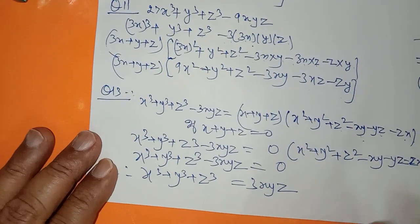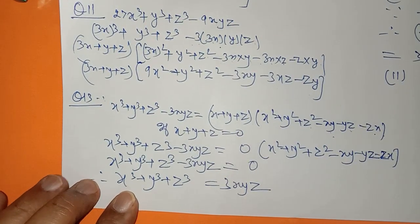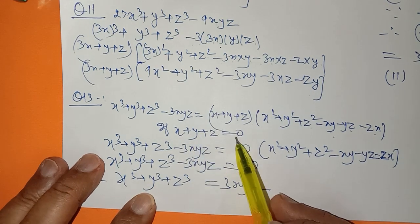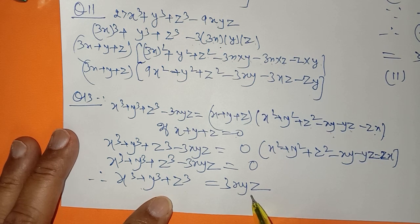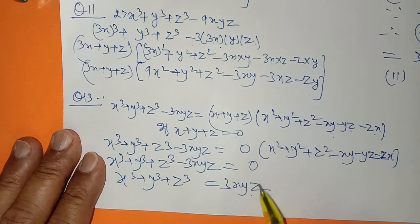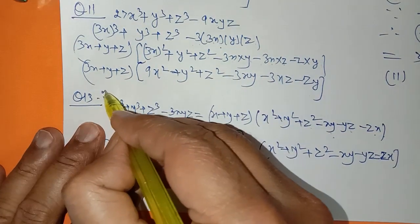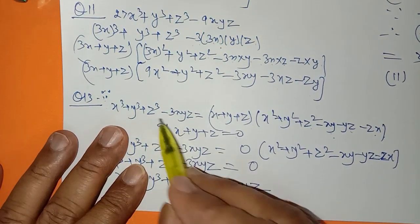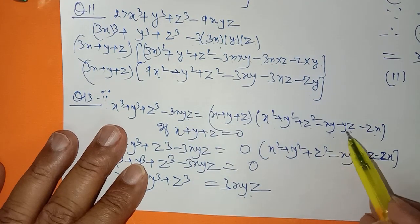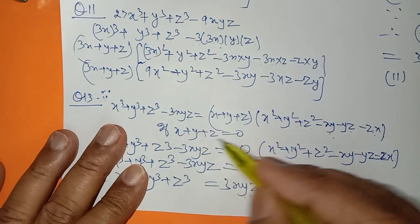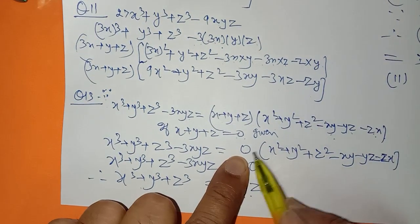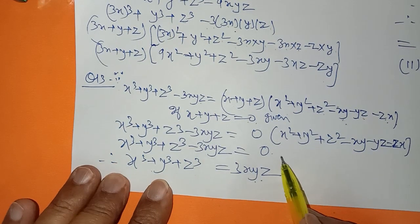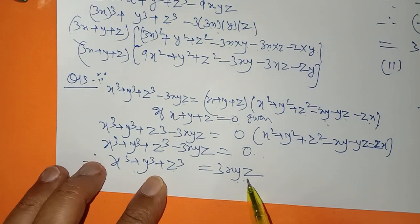Question number 13 was also proved in lecture number 1 when we were doing identities. You had to prove: if x plus y plus z equals 0, then x³ plus y³ plus z³ equals 3xyz. Using the identity, substitute x plus y plus z equals 0 on the right-hand side. Multiplying 0 by the bracket gives 0, so x³ plus y³ plus z³ equals 3xyz.